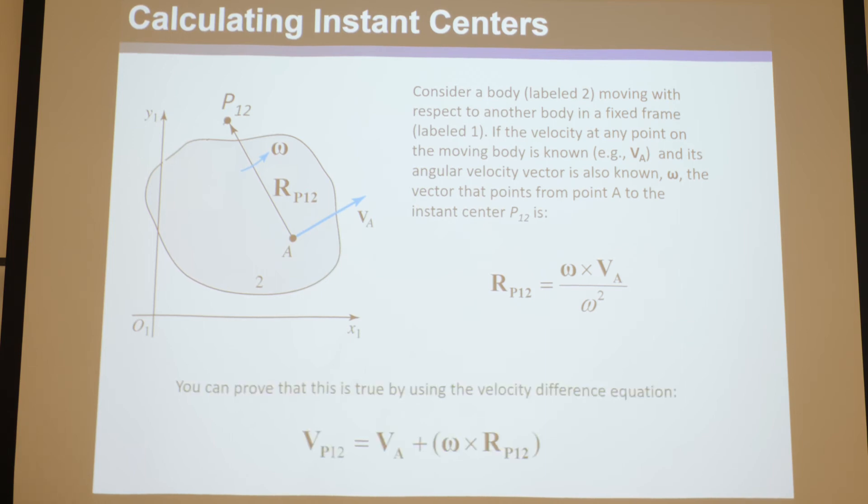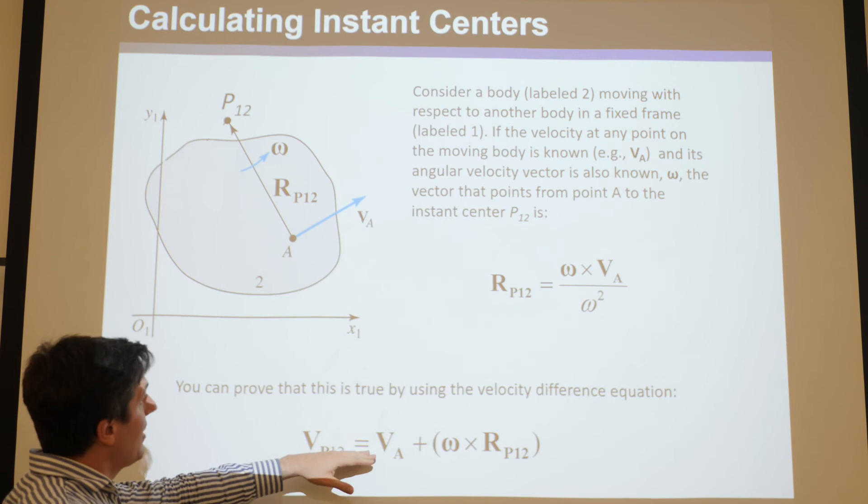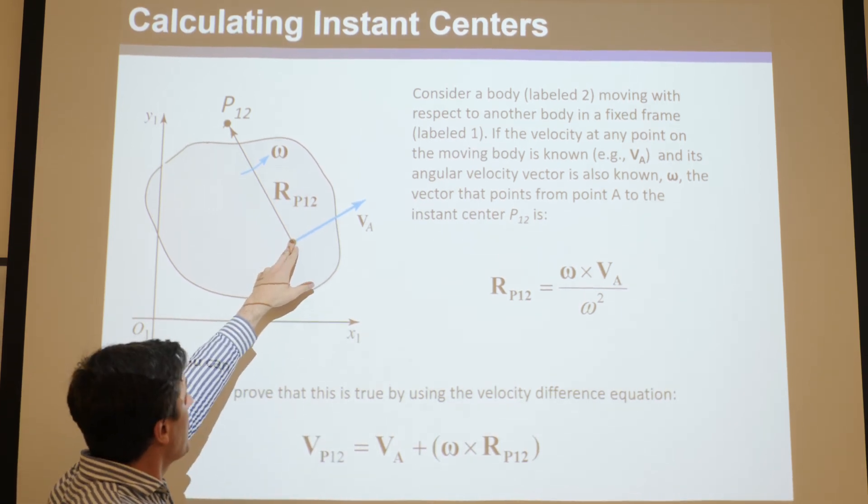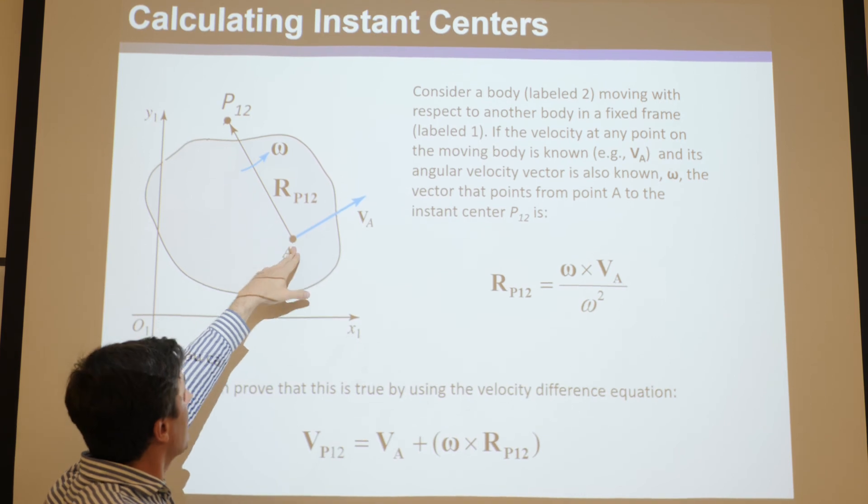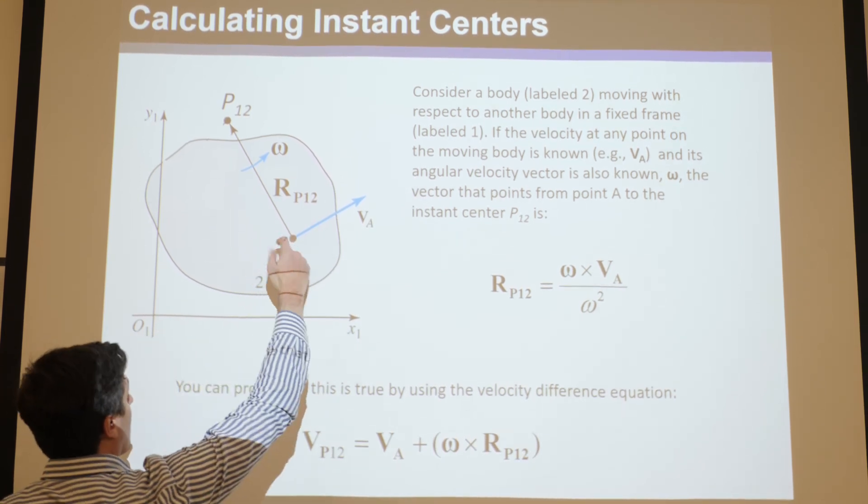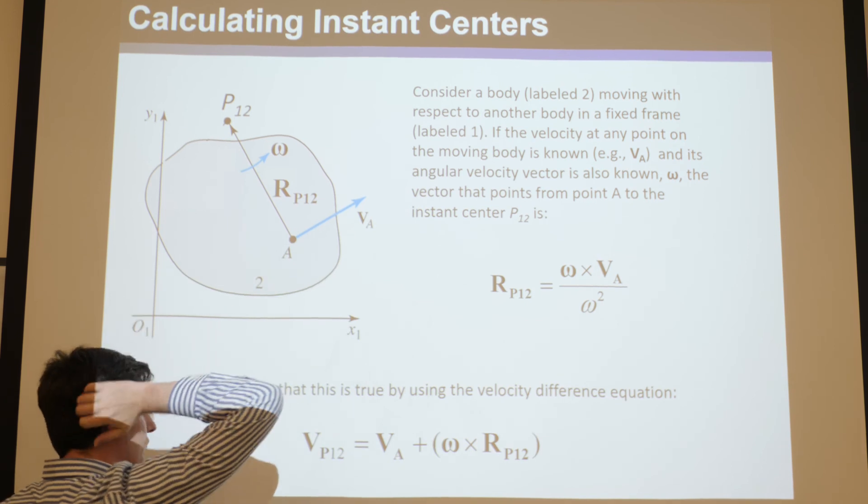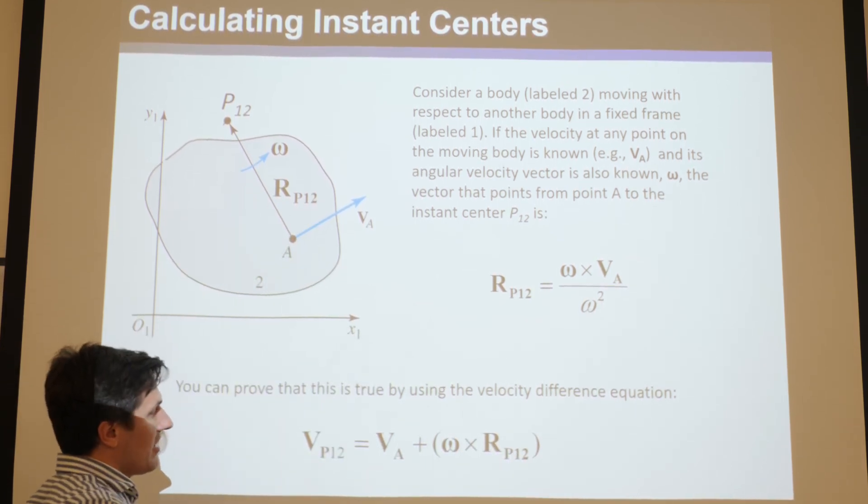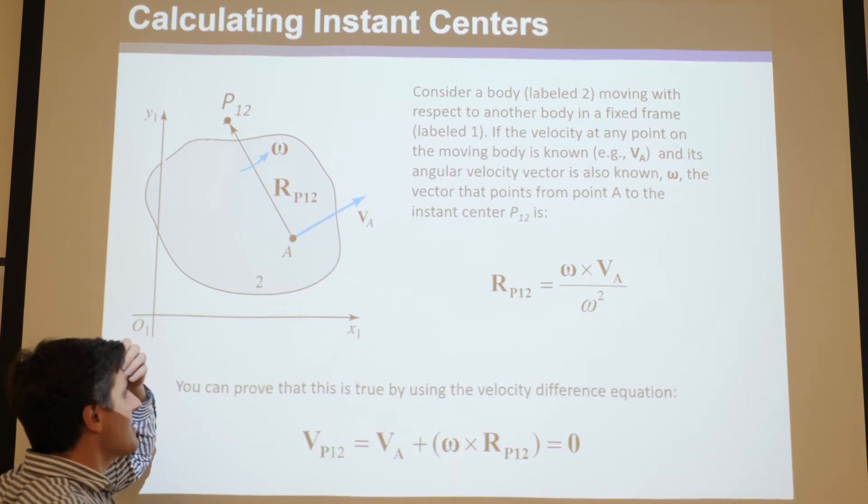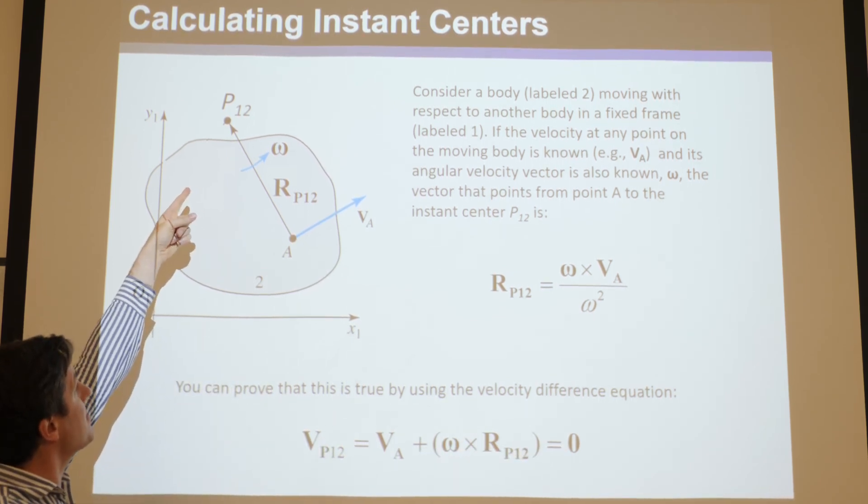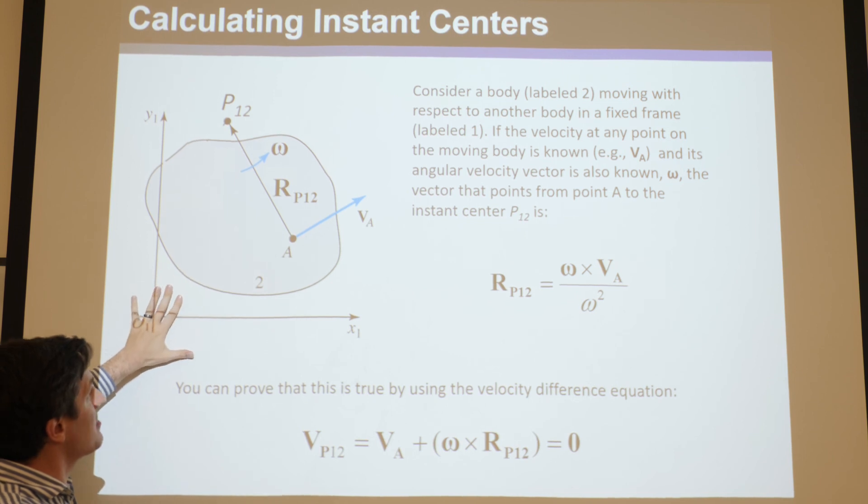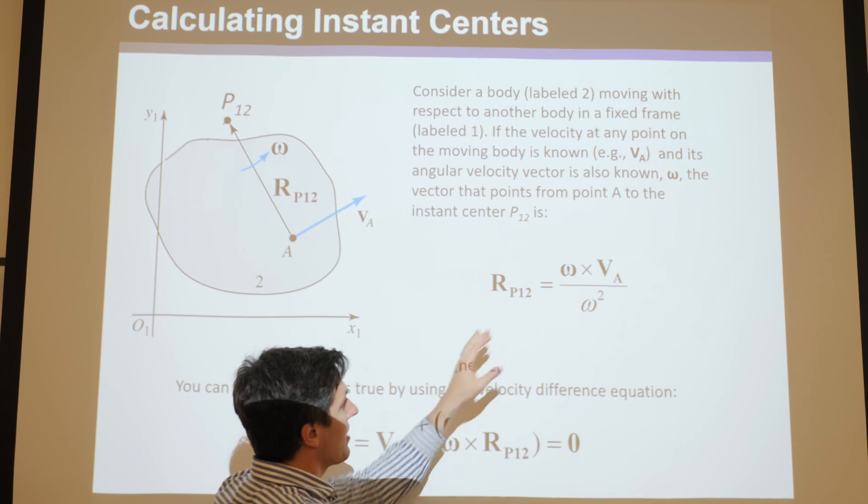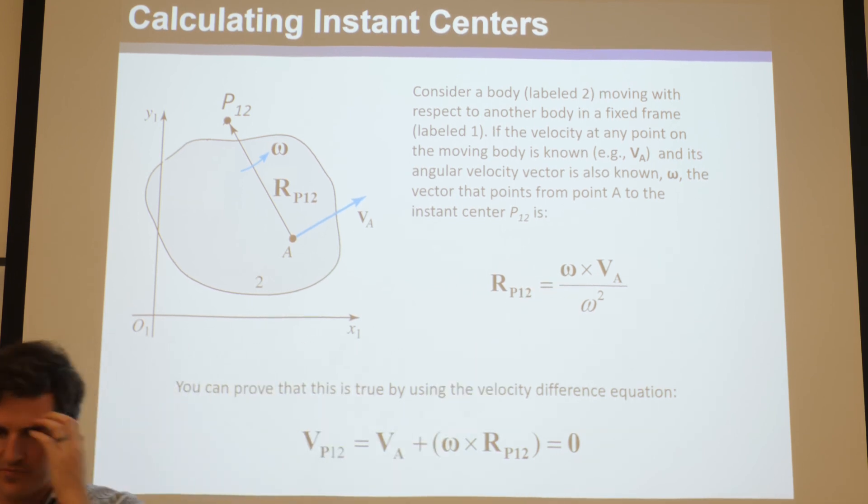And if you want a derivation of this, you can use the velocity difference equation. You can imagine, we know the velocity of this, it's VA, and we want to march to the velocity of that, so we take plus omega of the body cross RP1, right here, that'll get the velocity of that, which you know equals zero, because it has the same velocity, if it's truly the instant center, it has the same velocity as this, which is zero, everything's not moving on the ground. And then you can rearrange this and do math magic, and you get this, that's how they derived it.